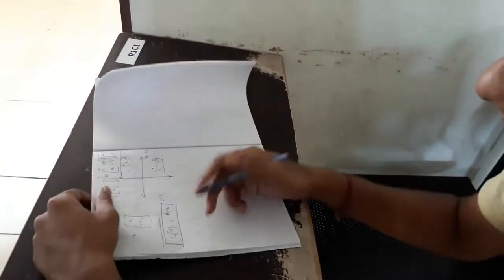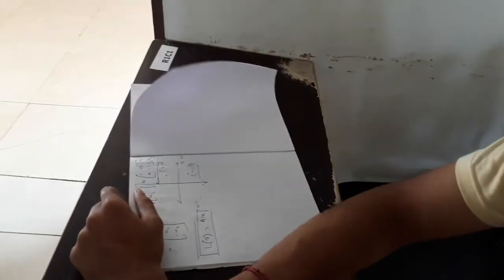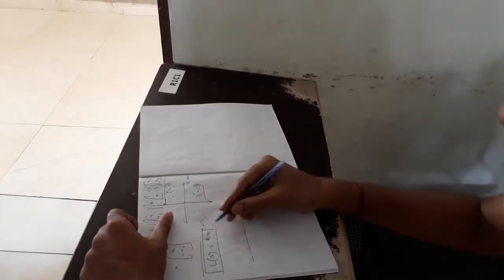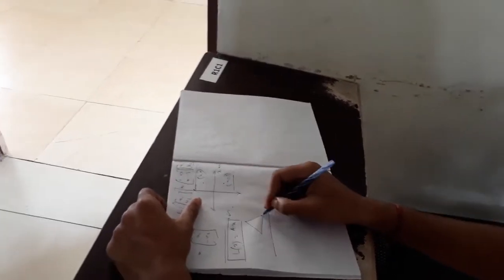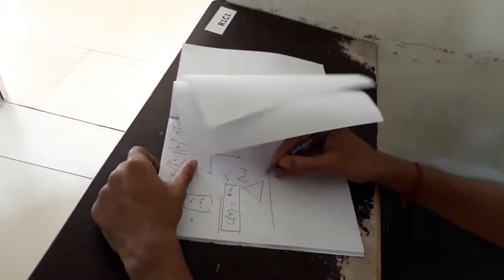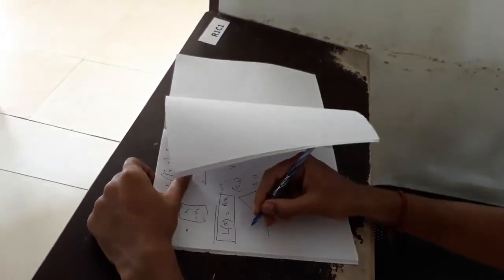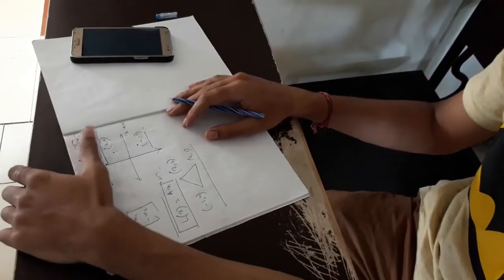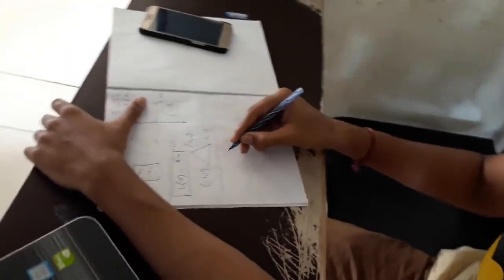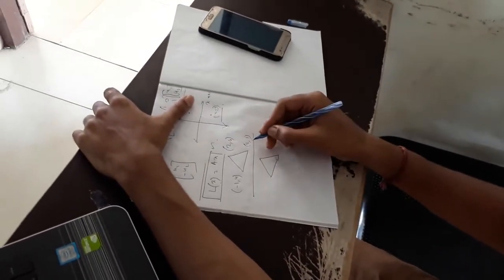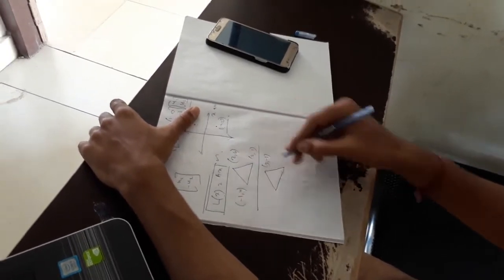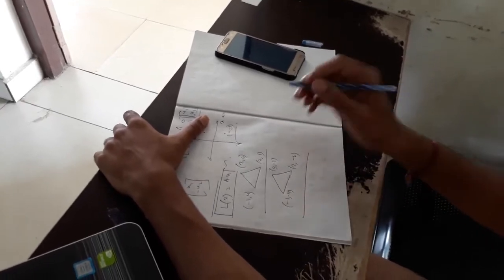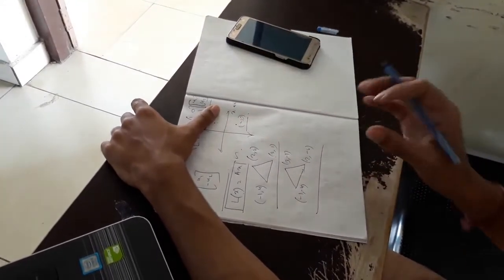Now, considering an example, suppose we want to transform a triangle based on the x axis. We get this triangle points as 2 comma 6, 3 comma 1 and minus 1 comma 4. If we reflect this along x axis, we get this point reflection as 3 comma minus 1, this as 2 comma minus 6 and this as minus 1 comma minus 4. This is the entire reflection of the triangle along x axis.